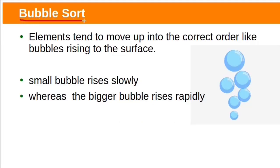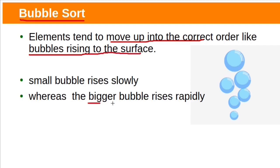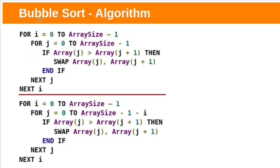Why is it called bubble sort? Elements tend to move up into the correct order, like bubbles rising to the surface. Bigger bubbles rise rapidly.